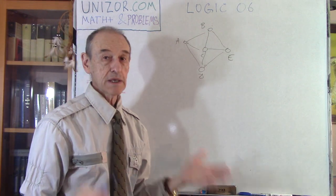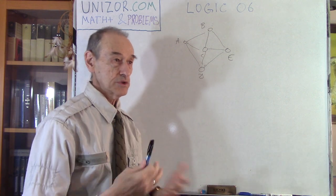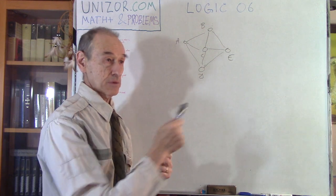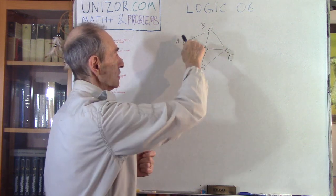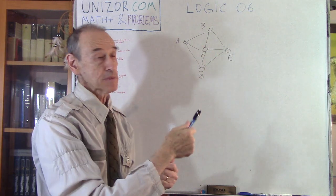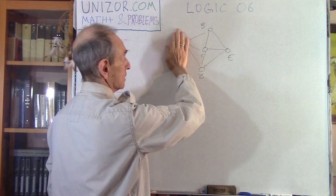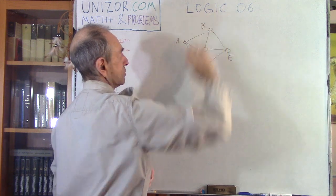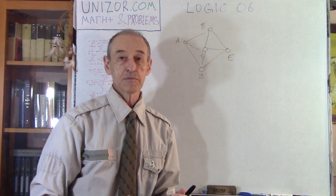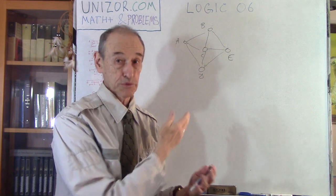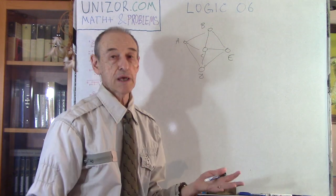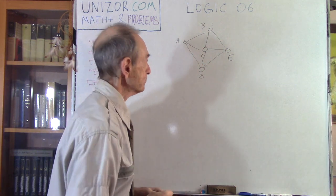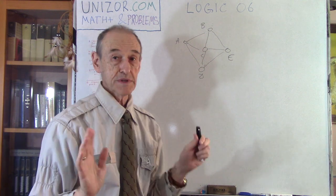That's basically it. We use the condition of the problem that out of any group of four, there is one connector connected to three others. We use this condition four times — for this group, then for this group, then for this group, and then for that group. By applying the same condition up to four times, we inevitably arrive at the necessity of some town being connected to all four. It's inevitable. That's it for this first problem.